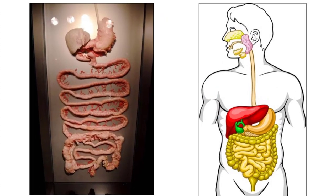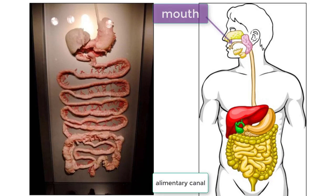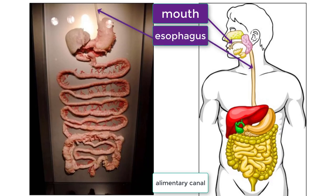These two images depict real and digitally created digestive systems. Let's label the structures and talk about their functions. Starting with the organs of the alimentary canal, when food enters your mouth, you physically break down food molecules with your teeth and send it down your esophagus when you swallow.